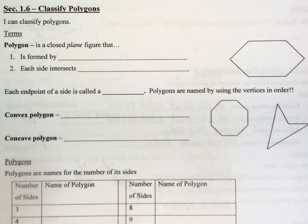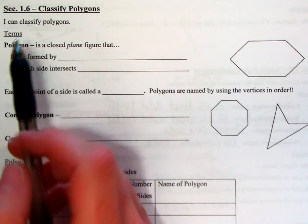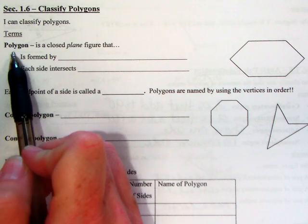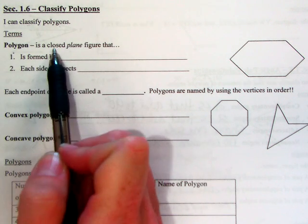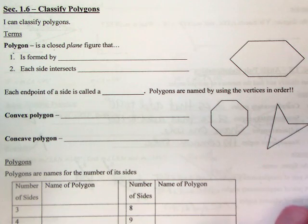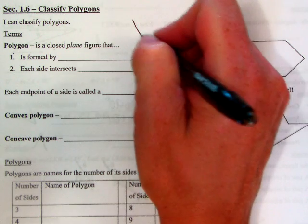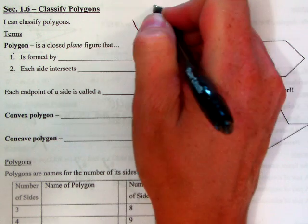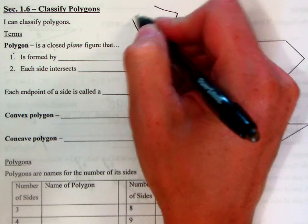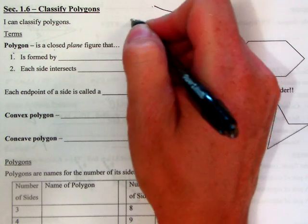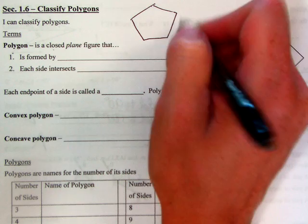The first thing we want to talk about is what a polygon is. It's a closed plane figure. That just means it's not three-dimensional and it has to be closed — I can't have an open side. I've got to close it off. Then it's a polygon.